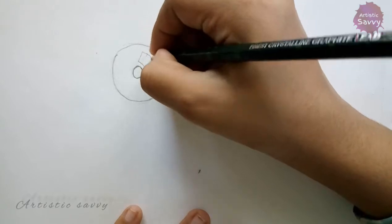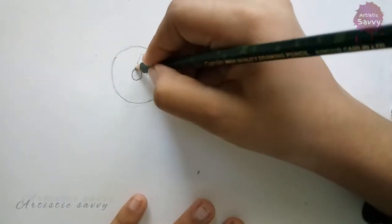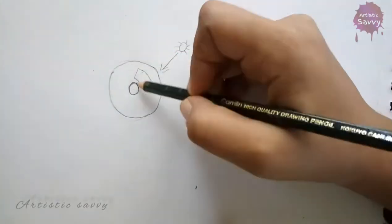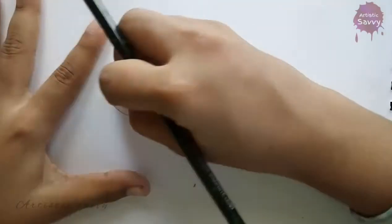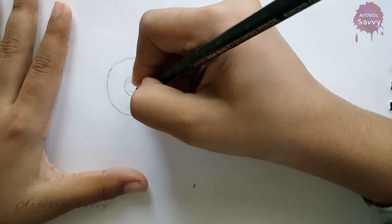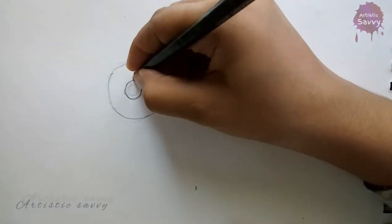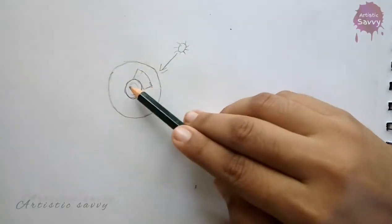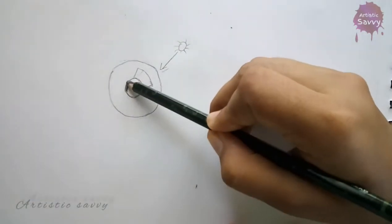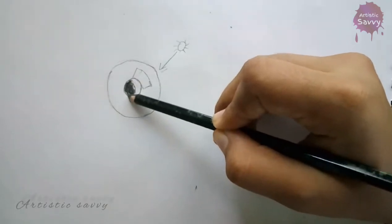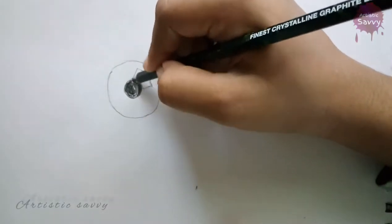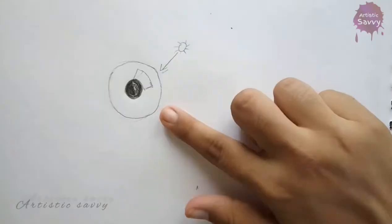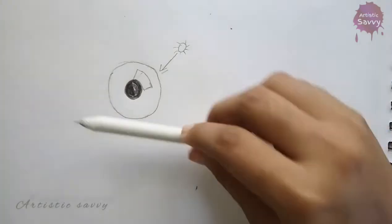Now I'm going to shade my pupil. The size of the pupil depends upon how much light enters into our iris, so if it's in a light room the size will be smaller, and if it is in a dark room the size will be larger. I'm leaving a little white line though.